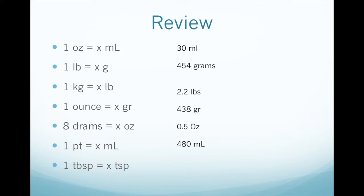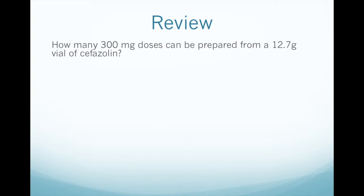How many 300 milligram doses can be prepared from a 12.7 gram vial of cefazolin? First we do ratio proportion: one dose equals 300 milligrams. We'll have to convert the 12.7 grams to milligrams, so that would be 12,700. When we cross multiply and divide, that gives us 42 doses.